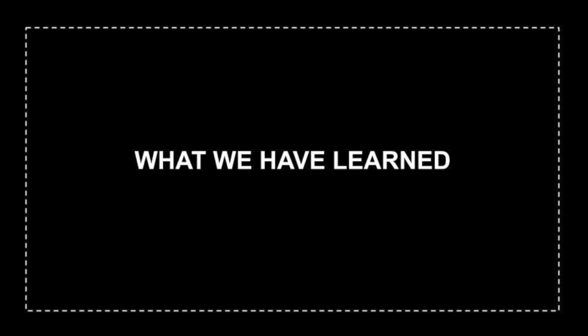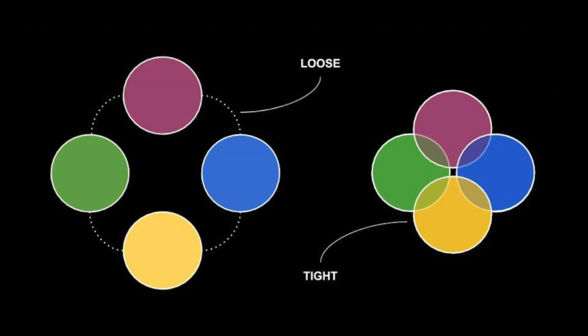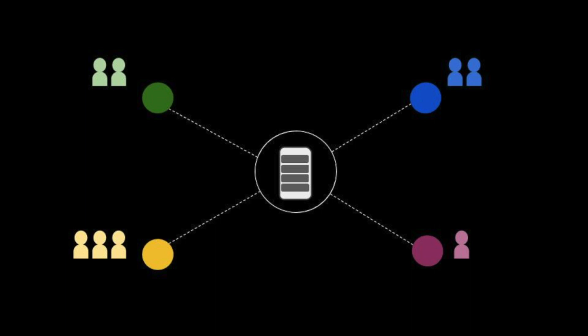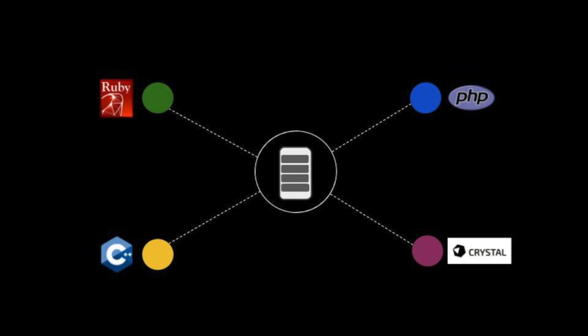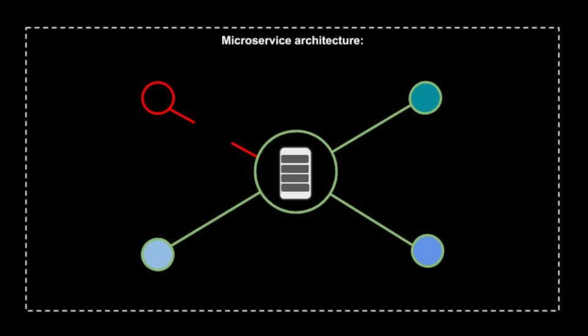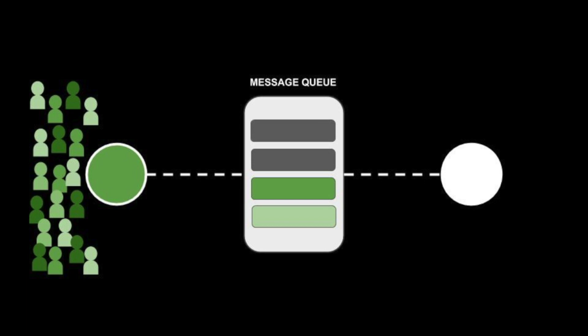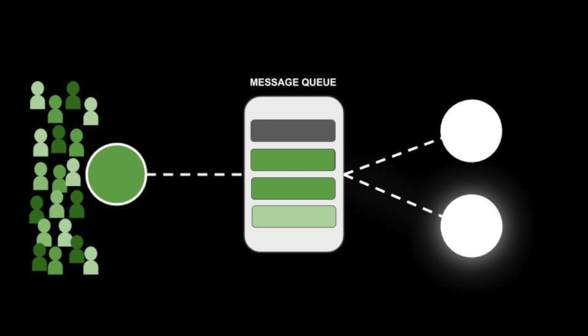Let's go over what we have just learned. We built a system with low coupling, as no service needs to know about other services. Development and maintenance were easy to do, since different developers could work on different services at the same time, and different services could be written in different languages. Fault isolation was achieved — the complete app was not down just because of a single failure in one service. And finally, we have built a highly scalable application. If one part of the system is under heavy load, the queue can grow, and if it's growing a lot, we can just add more services that can consume from the queue.